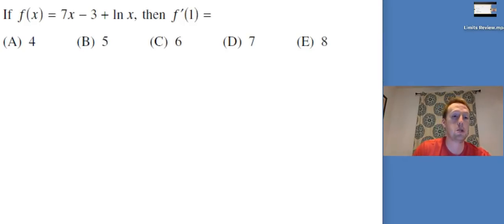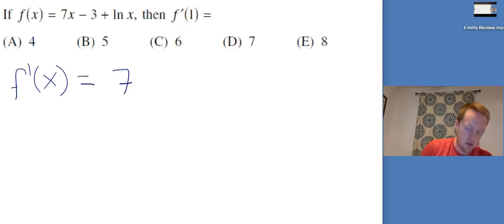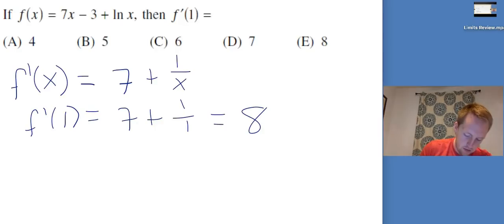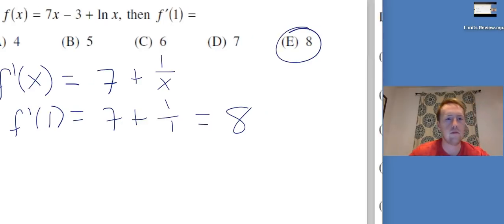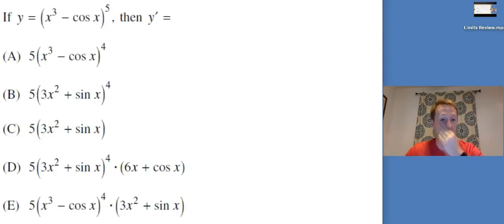If F of X equals 7X minus 3 plus LN of X, then F prime of 1 equals... Well, first I've got to find F prime of X, right? Derivative of 7X is 7. The derivative of the minus 3, it's a constant, it just disappears. And then the derivative of LN of X is 1 over X. So now I'm going to plug in 1. And that gives me 8.